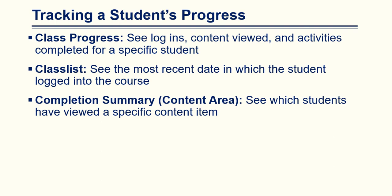Faculty might also look in the class list area, which is where they can see the most recent date each student has logged into the specific course. They might also look at the completion summary, which is in the content area — this is where the instructor can see which students have viewed a specific content item.